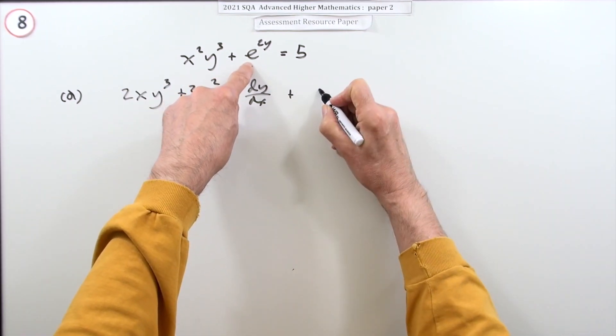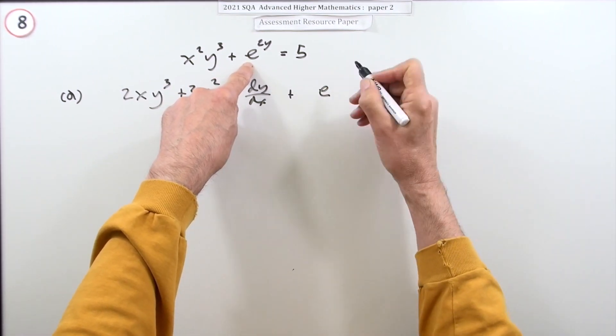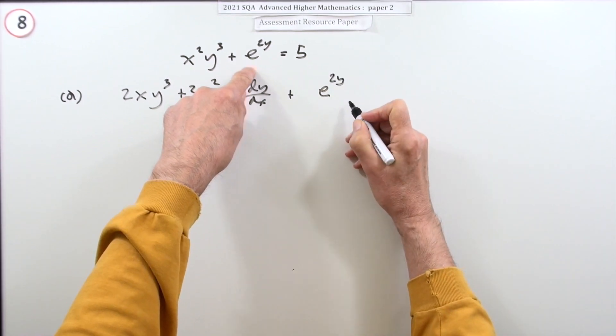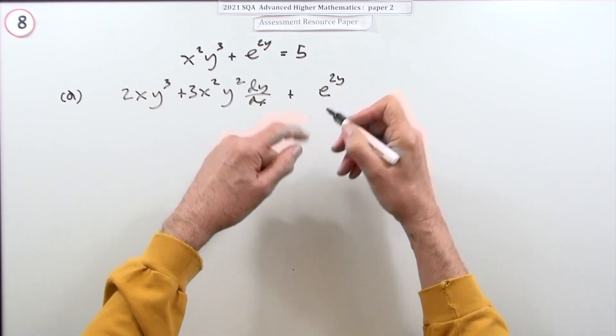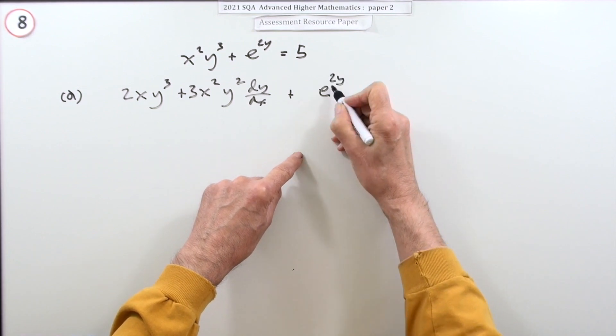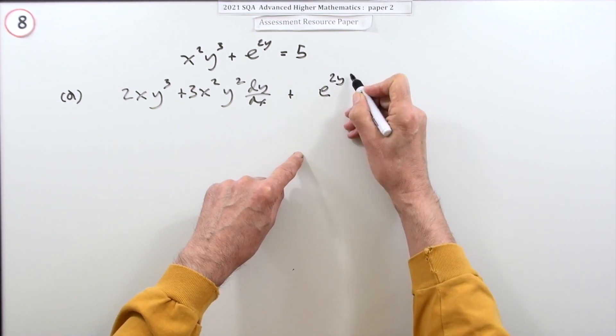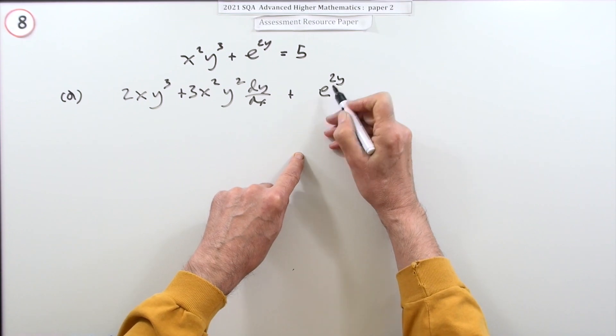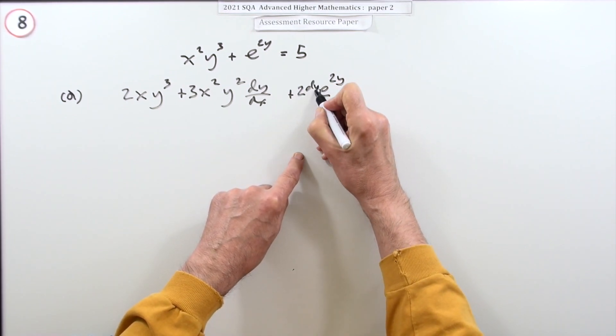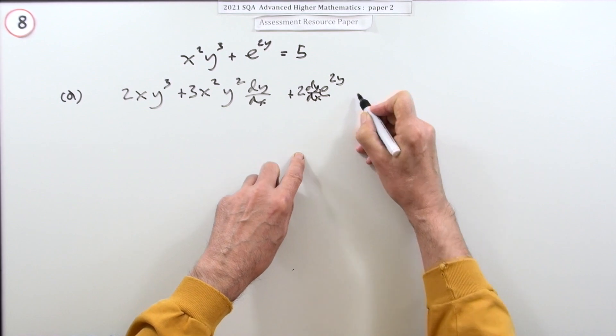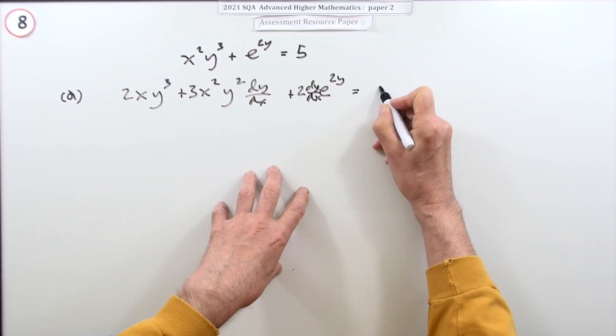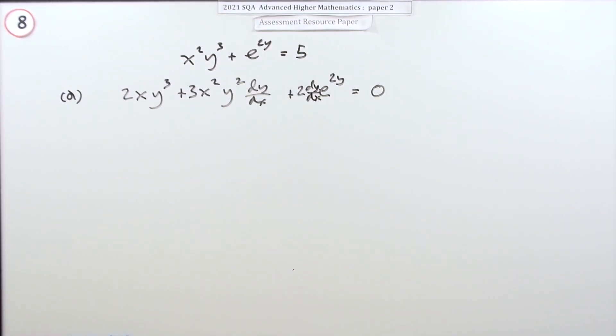Now this part, e. Well e's handy because it just stays e of whatever, but it's a function of a function - chain rule - so multiply by the derivative of the function it's acting on. The derivative of 2y is 2 dy/dx. 5 doesn't change, derivative is 0.